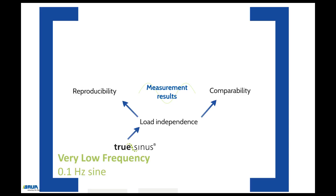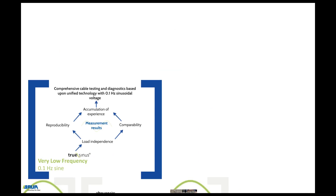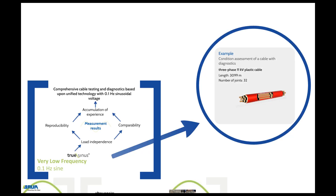Thanks to the comparability of the measurement results, the operator can build up empirical and reference values in the field of dissipation factor measurement and partial discharge testing. This comparability of diagnostic results massively increases the benefits of cable diagnostics. A further advantage is the fact that the sine 0.1 Hz technology can be used for all meaningful measurement methods, such as dissipation factor measurement and partial discharge testing. Comprehensive cable testing and diagnostics is therefore based upon one unified technology with 0.1 Hz sinusoidal voltage. Let us take a look at the benefits and significance of the measurement methods based upon 0.1 Hz sine using an example.